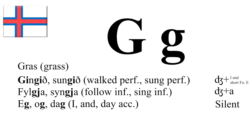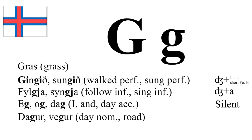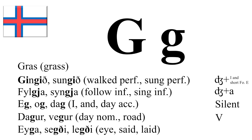Then G can also be silent in these examples: E, O, DÄ — and these are very normal words that you will hear and see everywhere. So it's important if you're learning Faroese that you remember G can oftentimes be silent. Then we have DÄVOR and VÄVOR, where the G is a V sound. And then lastly we have a J sound in G: EG-J, SEG-J, LEG-J.